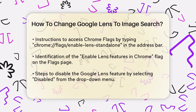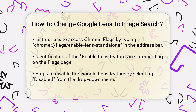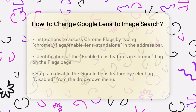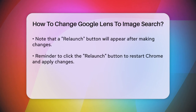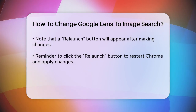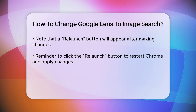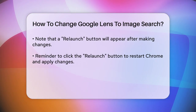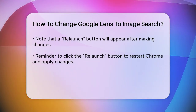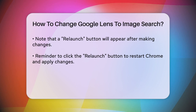On this page, you'll see the 'Enable Lens features in Chrome' flag. Click on the drop-down menu next to it and select Disabled. This will turn off the Google Lens feature in your right-click menu. After you've made this change, a Relaunch button will appear at the bottom right of your browser window. Click on this button to restart Chrome and save the changes.